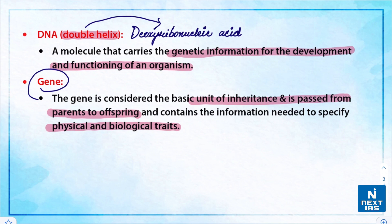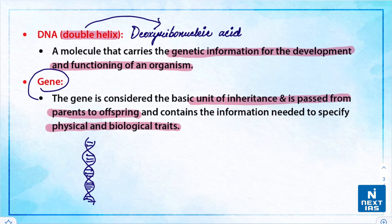Each molecule of DNA is a double helix — a term used to describe the physical structure of DNA. A DNA is formed from two complementary strands of nucleotides held together by hydrogen bonds. Nucleotides are organic molecules consisting of nucleotides and phosphates.